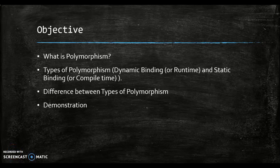The objectives we are going to be looking at in this session: number one, to define what polymorphism is all about. Also, to discuss the two main types of polymorphism, which are dynamic binding or runtime, and static binding or compile time. We are also going to be looking at the differences between types of polymorphism and demonstration using C-sharp.